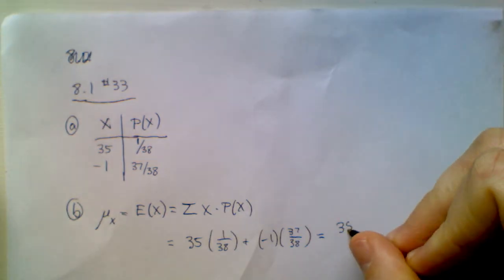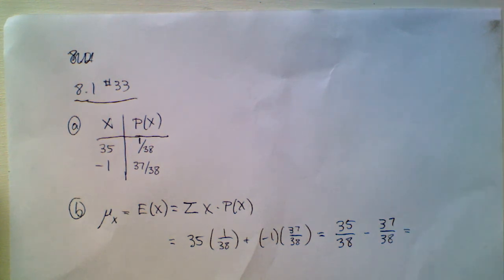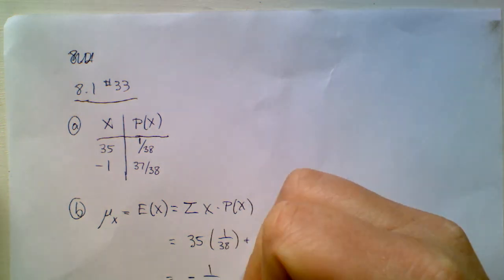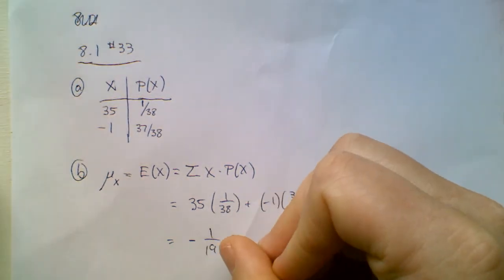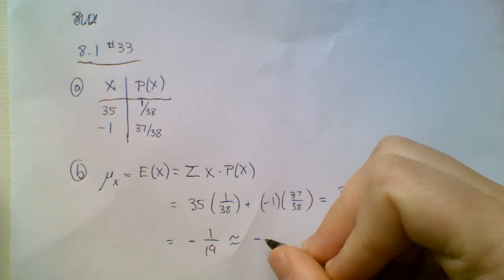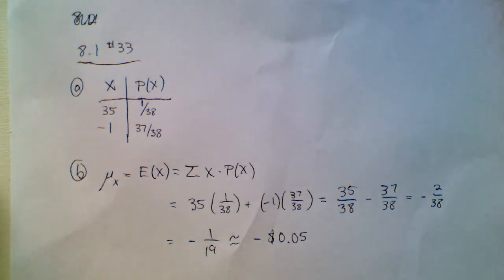This is 35 out of 38 minus 37 out of 38 — you're going to lose money. That's negative 2 out of 38, which is the same as negative 1/19. If you prefer a decimal, it wants us to round to the nearest penny, so to the nearest penny you're going to make negative $0.05. So you're going to lose 5 cents every game you play — or more precisely, in the long run you would expect to lose 5 cents for every game you play.